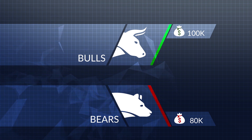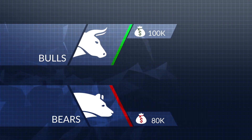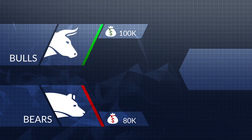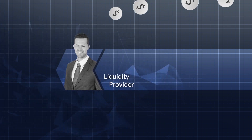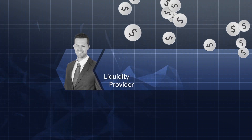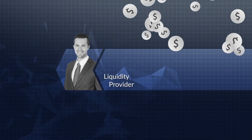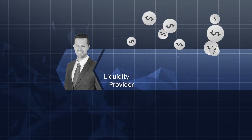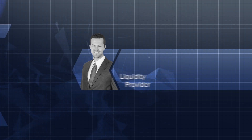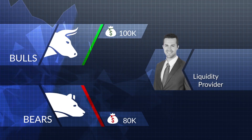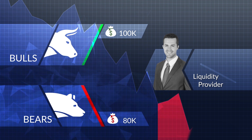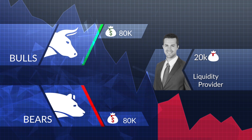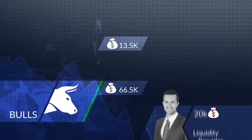That discrepancy of $20,000 is exactly the point at which the liquidity provider steps in. Liquidity providers are institutions in possession of capital that are always willing to take risk when they spot discrepancies in investments. If the bears' prediction comes true and the asset price goes down, the liquidity provider will take $20,000 to cover potential risks.